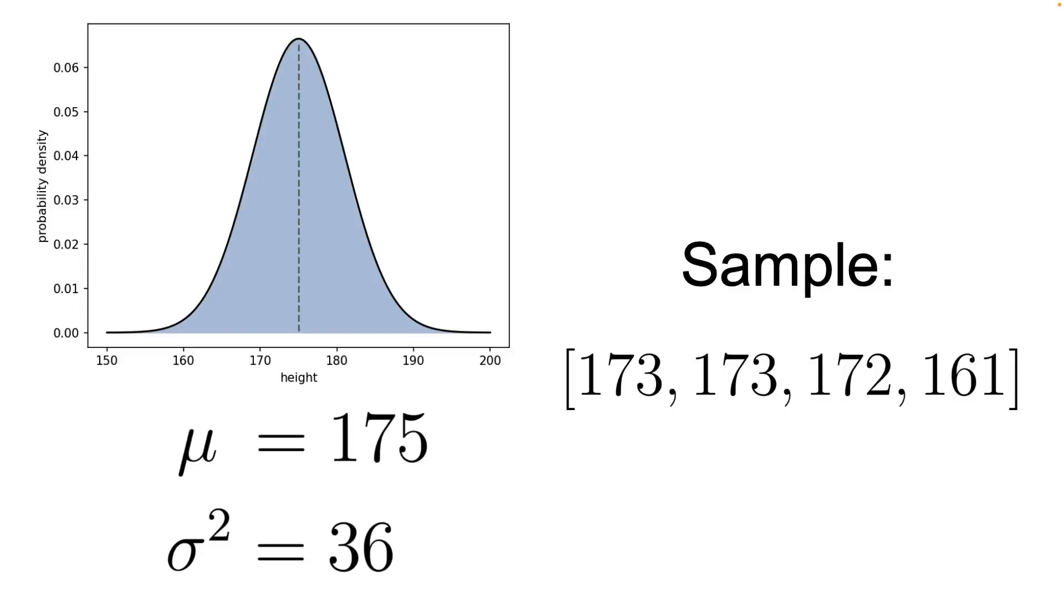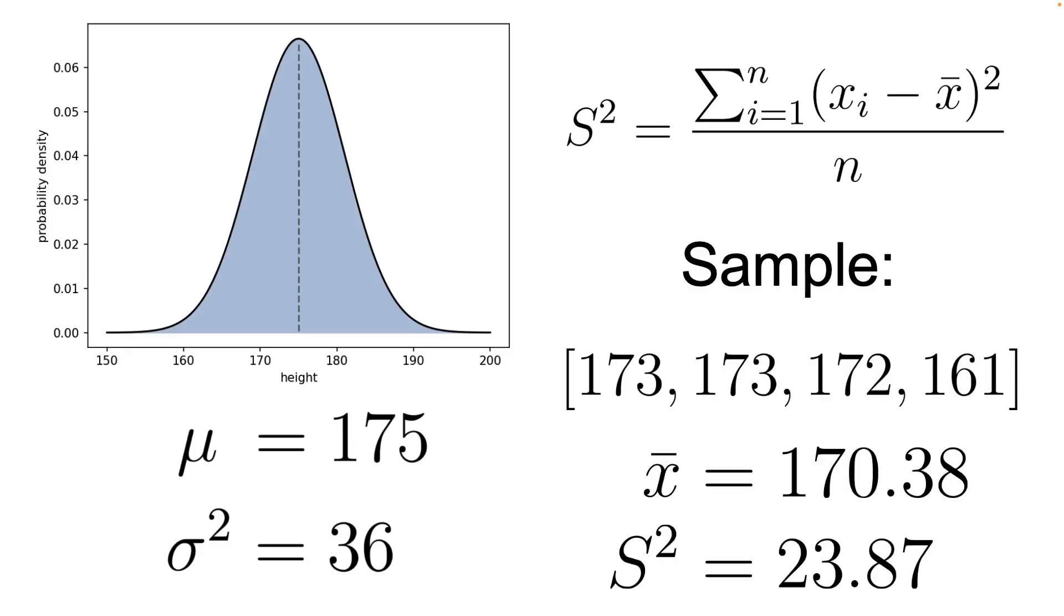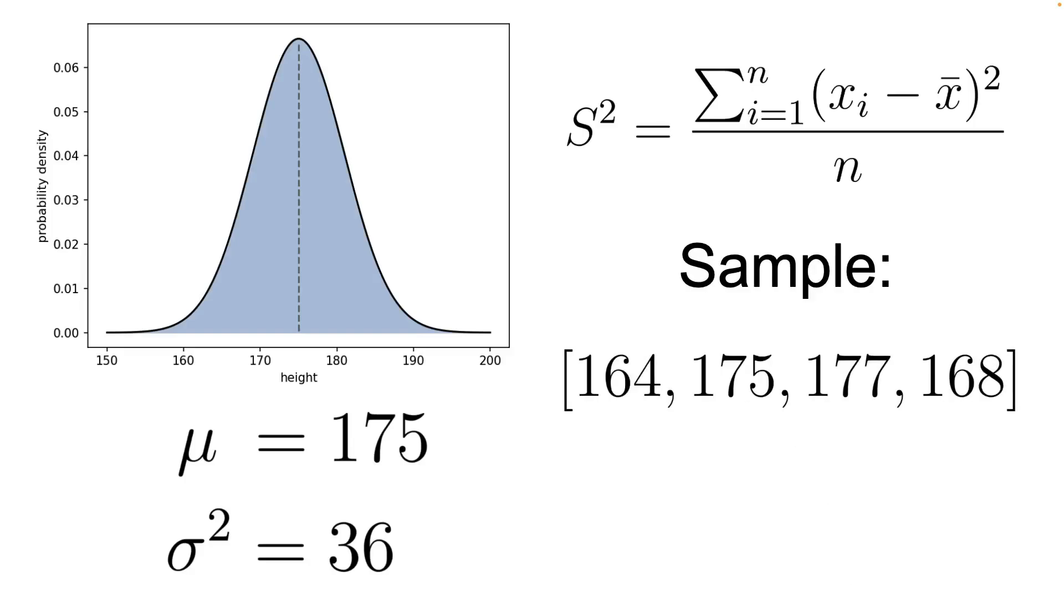This time, we are not employing the Bessel bias correction. We can observe that the resulting value is lower than the actual variance of the population. We can repeat this experiment again by taking another sample, computing the variance, and we can again observe that the resulting value is a little bit closer but still lower than the population variance.